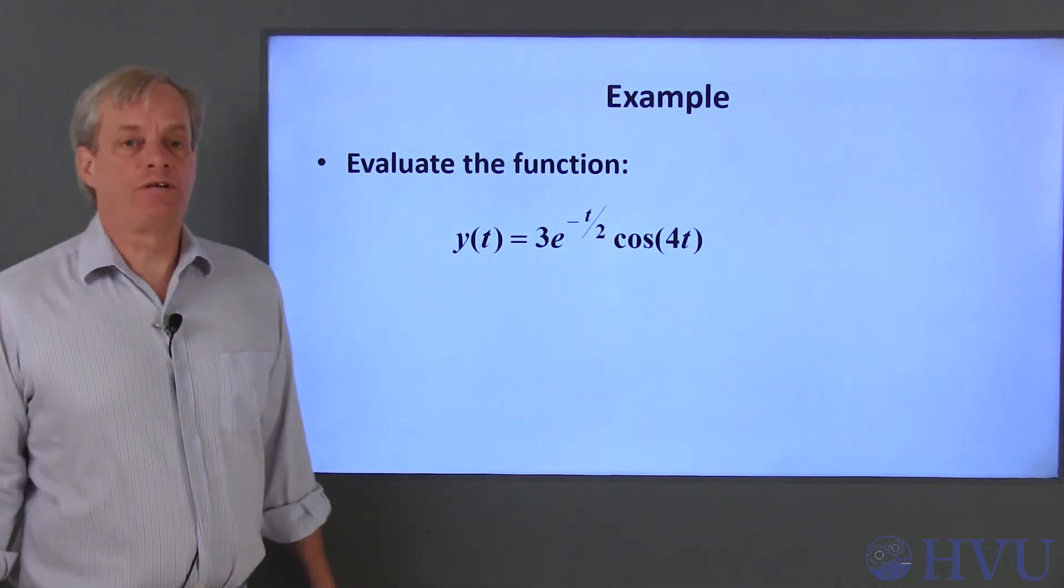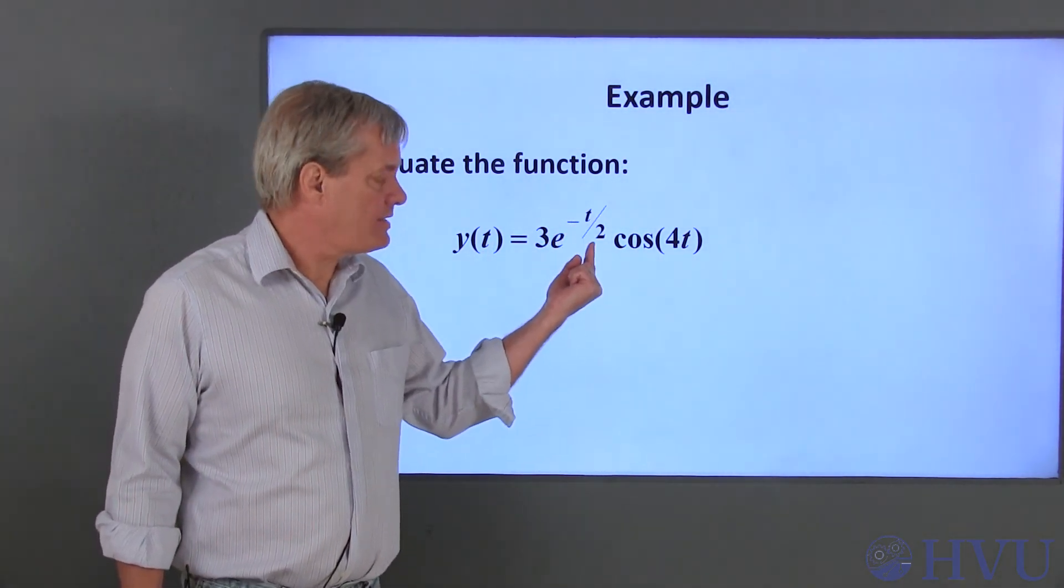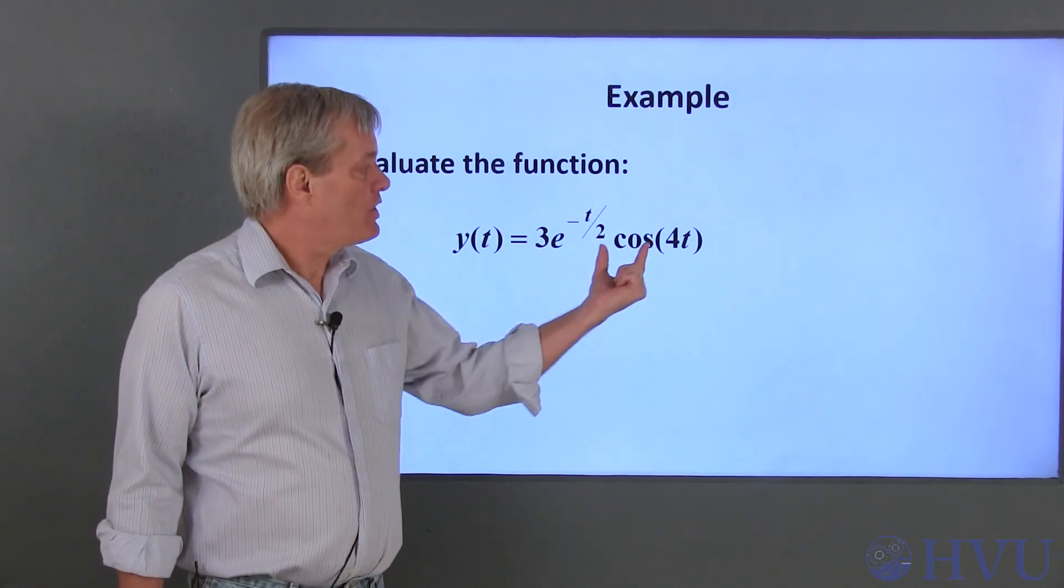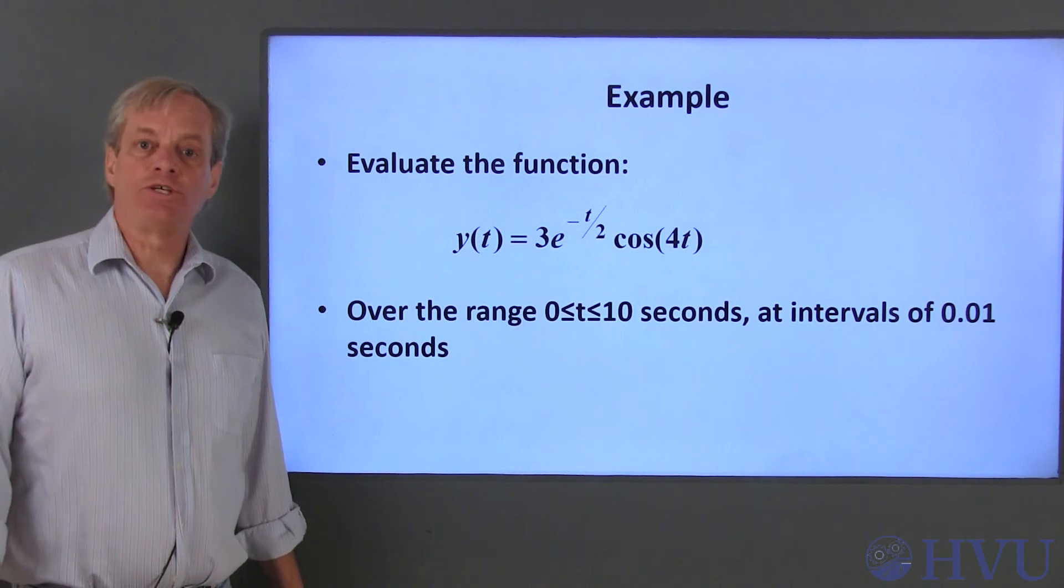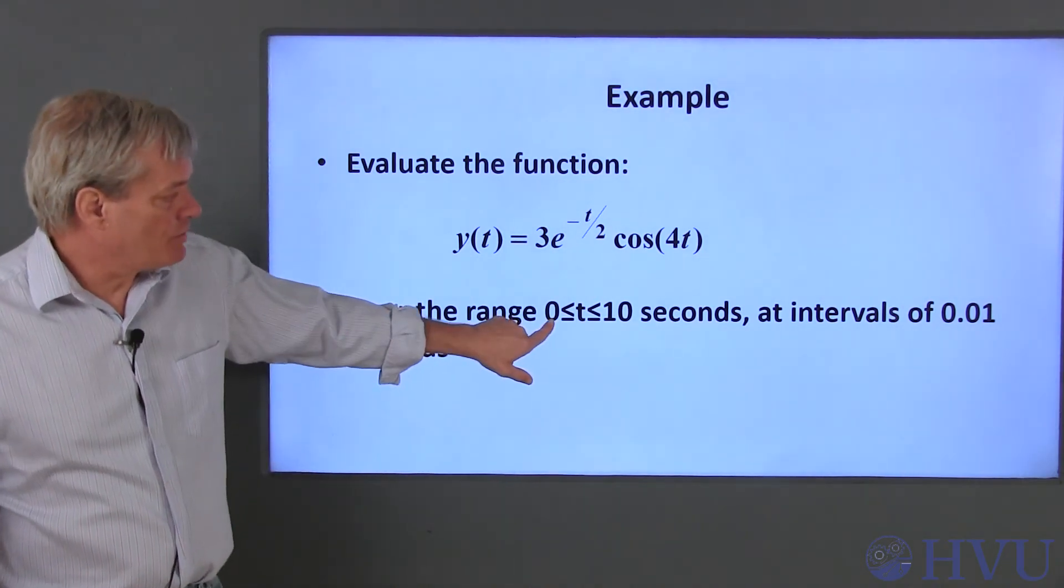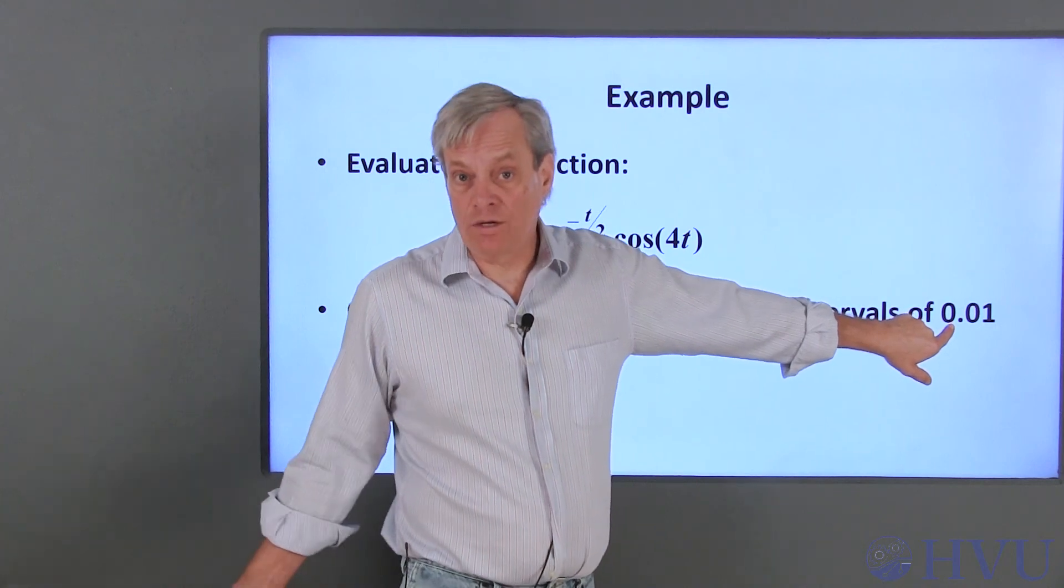As another example, consider the function Y of t is equal to 3 times e to the minus t over 2 times the cosine of 4 times t. I'll evaluate this function over the range of times t equals 0 to 10 seconds at intervals of 0.01 seconds.